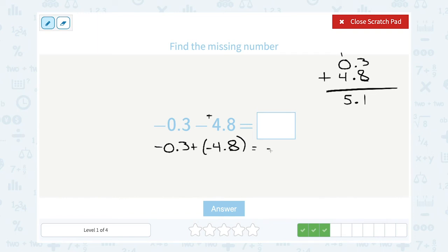Okay, and remember we already said our answer had to be negative. When you add a negative and another negative, you get a negative answer. So it would be negative 5.1.